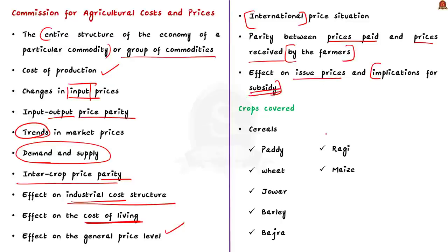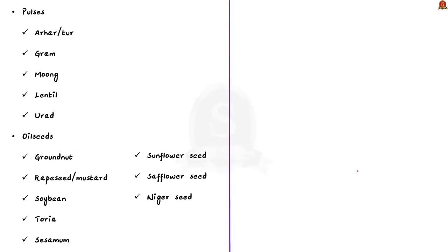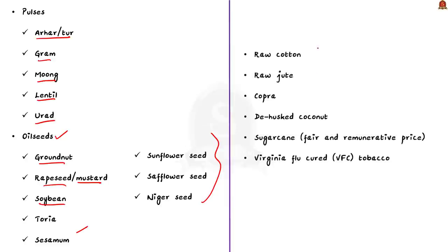Now let us see the crops covered under MSP. Cereals: paddy, wheat, jowar, barley, bajra, ragi, maize. Pulses: arhar, gram, moong, lentil, urad. Oil seeds: groundnut, mustard, soybean, sesame, niger seeds, sunflower seeds. In addition to that, raw cotton, raw jute, copra, de-husked coconut, sugar cane, Virginia flue-cured tobacco are also covered under MSP.